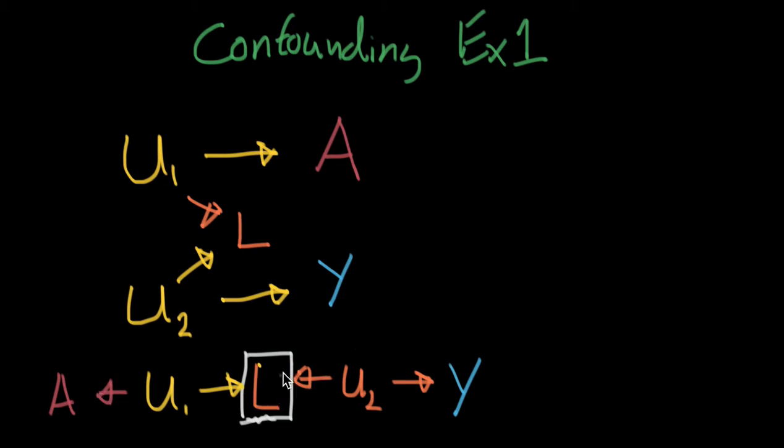We have in fact opened a back door. And this back door is so special, it actually has a name. We call this M bias. You want to take a guess why? Well, this kind of causal diagram up here kind of looks like a sideways M.